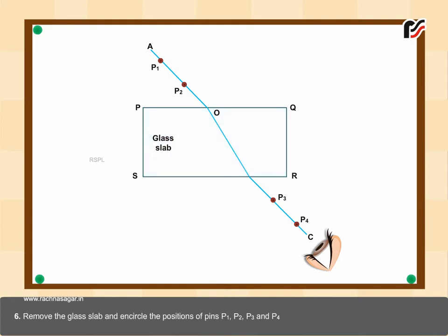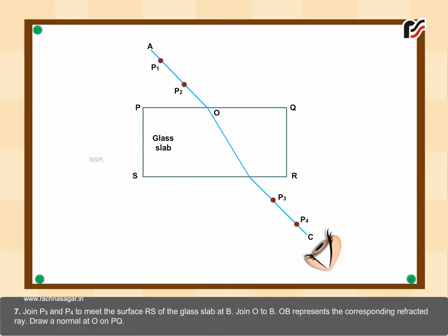Remove the glass slab and encircle the positions of pins P₁, P₂, P₃, and P₄. Join P₃ and P₄ to meet the surface RS of the glass slab at B. Join O to B. OB represents the corresponding refracted ray.